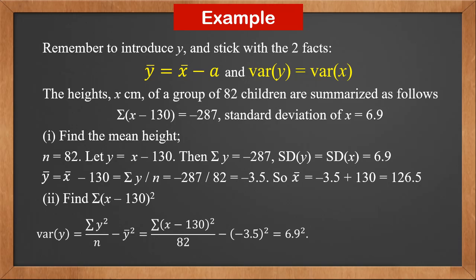From the second fact, we know var y is equal to var x. So it is 6.9 squared. Therefore, sigma x minus 130 squared is 498.52.